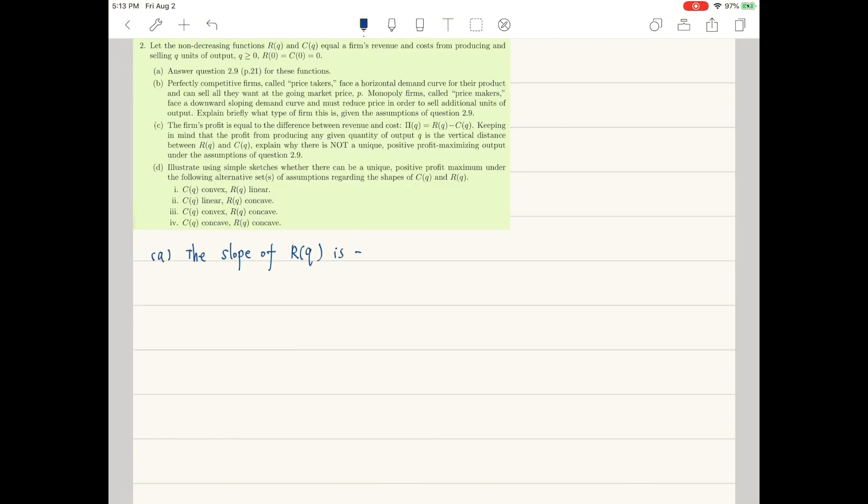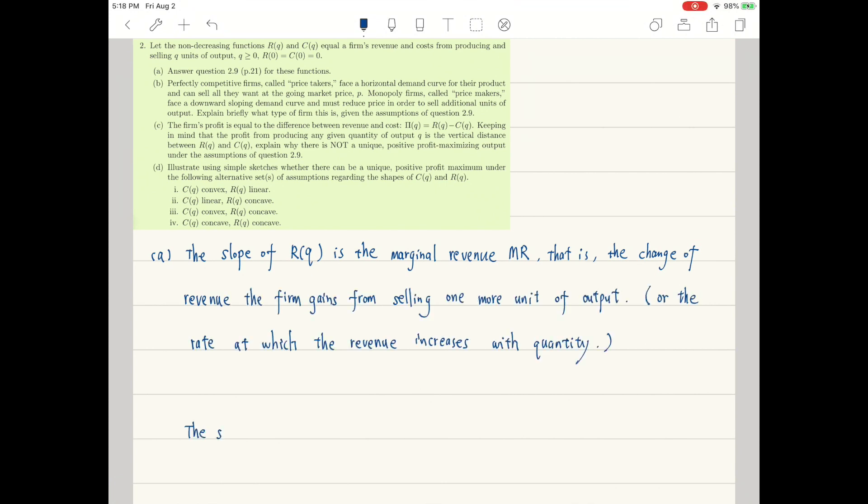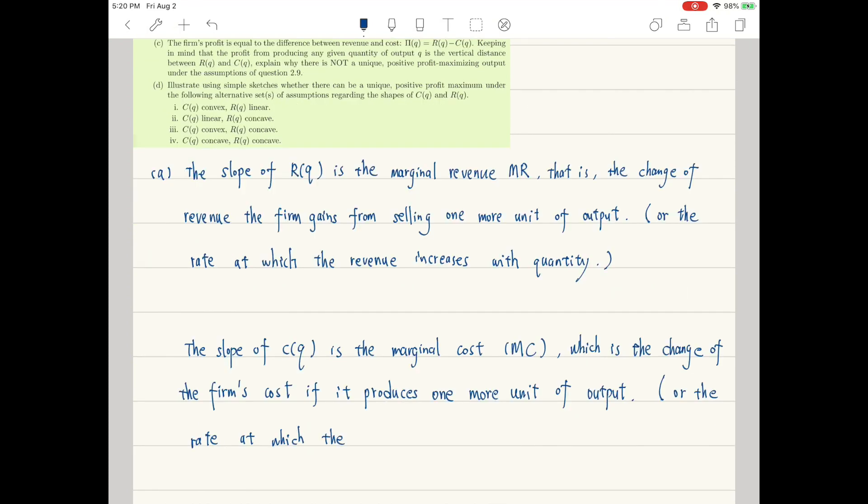For the second question, part a: the slope of revenue is called the marginal revenue, which is the change of revenue the firm gets from selling one more unit of output or the rate at which revenue increases with output. The slope of cost is called the marginal cost, which is the change of the firm's cost if it produces one more unit of output.